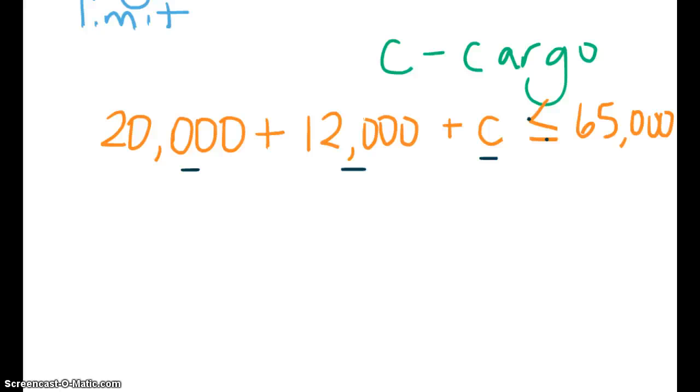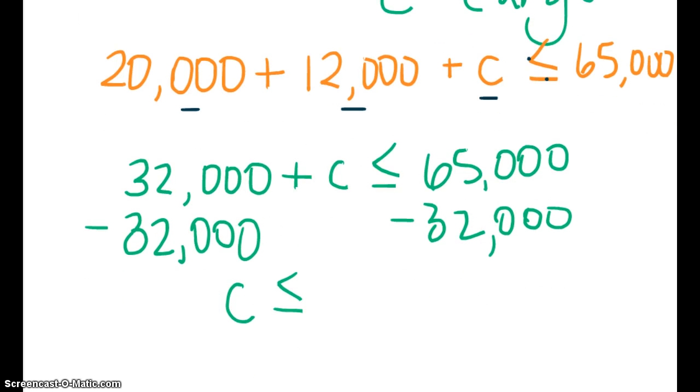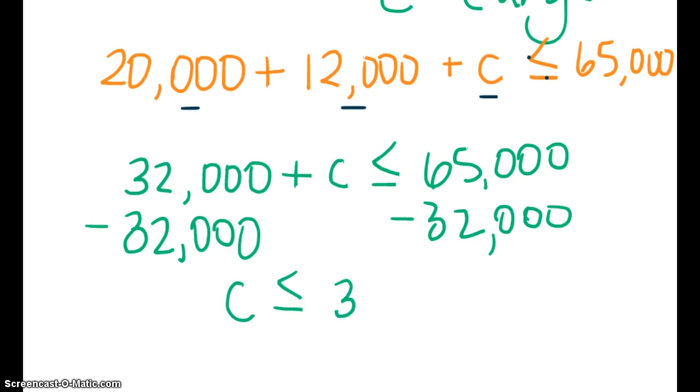So when we solve this, we get 20,000 plus 12,000 is 32,000 plus the cargo, less than or equal to 65,000. Now we have to subtract 32,000 from both sides. So we're left with the cargo can be less than or equal to 33,000 pounds.